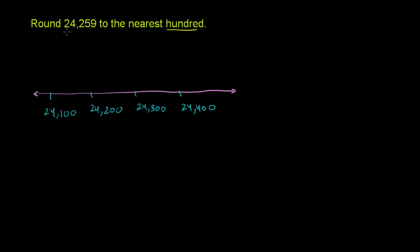Now, on this number line, where is 24,259? So if we look at the number line, it's more than 24,200, and it's less than 24,300, and it's 259.